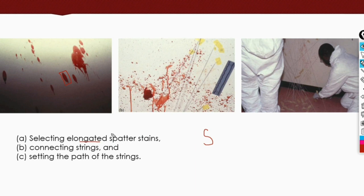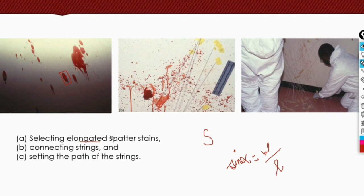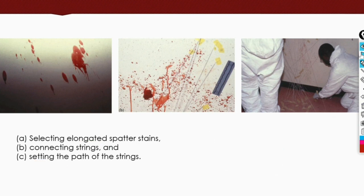The angle of impact is calculated using sine(alpha) = width divided by length of the stain. After calculating the angle of impact for each well-formed spatter stain, a string is connected at the stain on one end, extended along the angle of impact, and converged with strings from other stains. By tracing the path of these strings, we can calculate the area of origin.